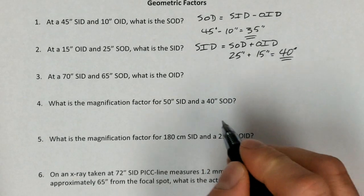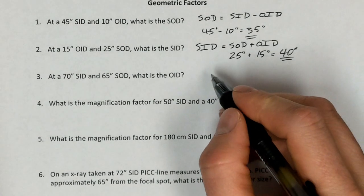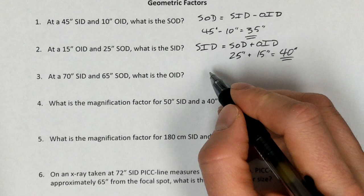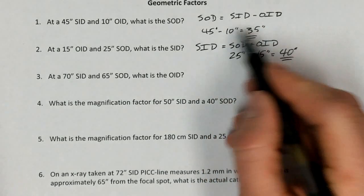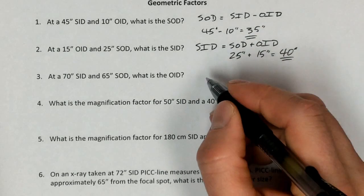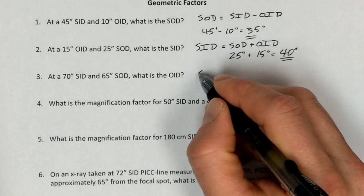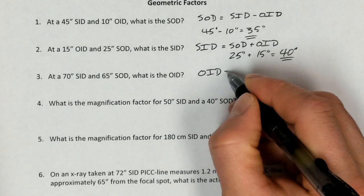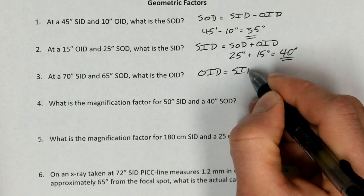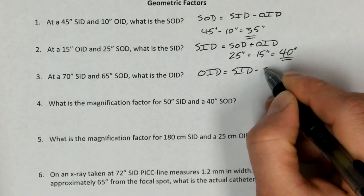This next problem is asking us about how to solve for the OID, the object to image distance. And so kind of extrapolating from these two, we can come to understand that that object to image distance is going to equal the SID minus the SOD.